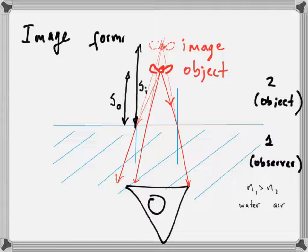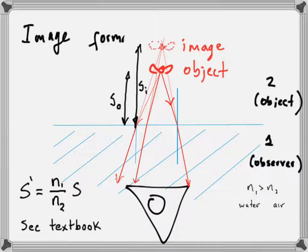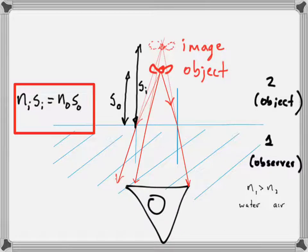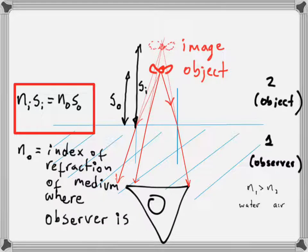The distance to the actual fly we call s_o, the object distance. The distance to the image of the fly we call s_i. In your textbook you'll find a derived equation for this situation. I'm not going to derive it, but I'm going to rewrite it in a form that is easier to handle.